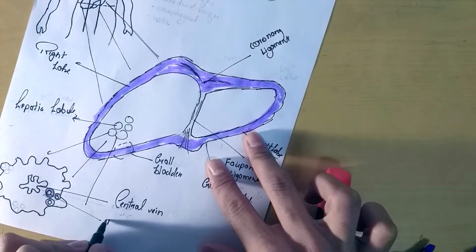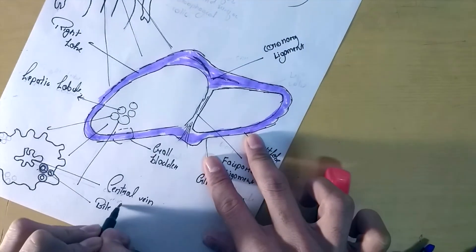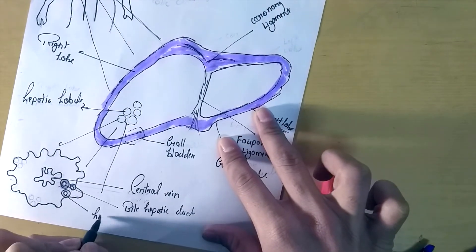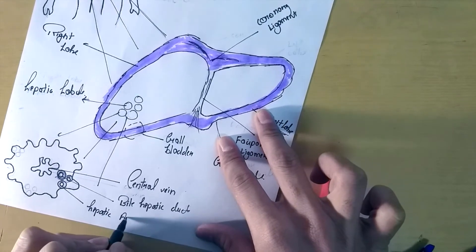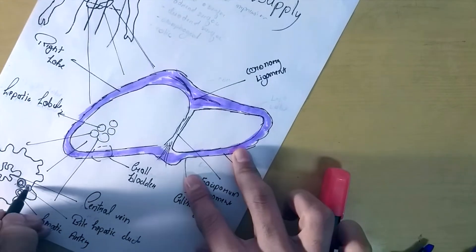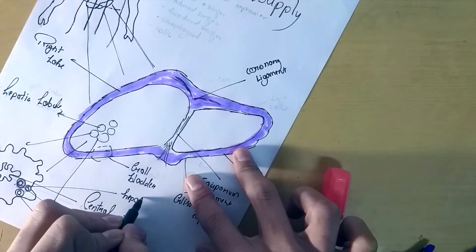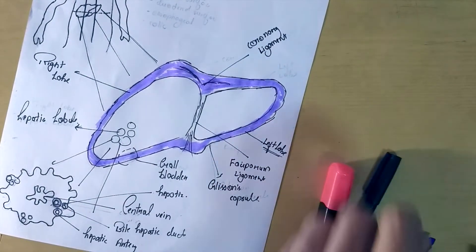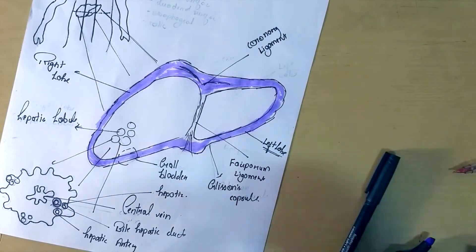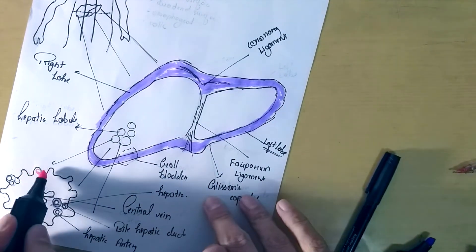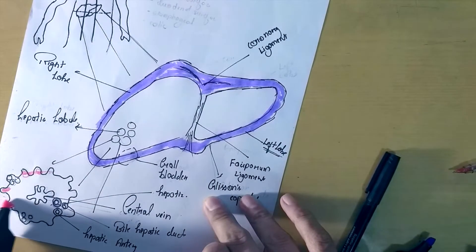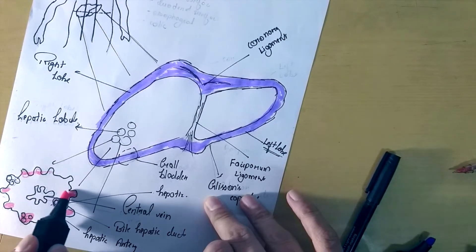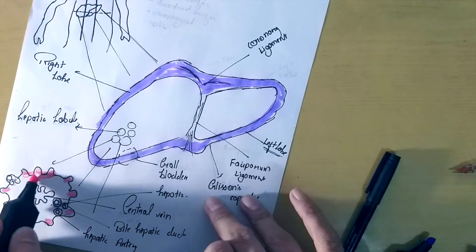So this is the central vein, and this is the bile duct — also called the hepatic duct. After that we see the hepatic artery, and this is said to be the hepatic vein. By coloring we can easily determine the whole structure of the functional unit of the liver, which is said to be the hepatic lobule.